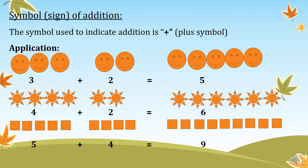Then we get five plus four equal to nine. Five squares plus four squares equal to nine squares.